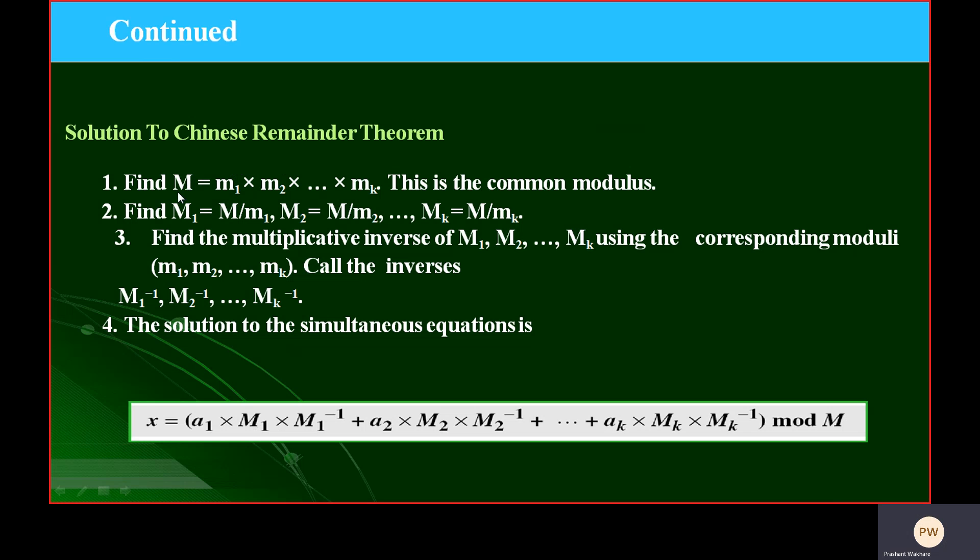Once you get capital M, then you have to find capital M1, capital M2, up to MK. M1 can be found as capital M divided by m1. We can find capital M2 as capital M divided by m2.